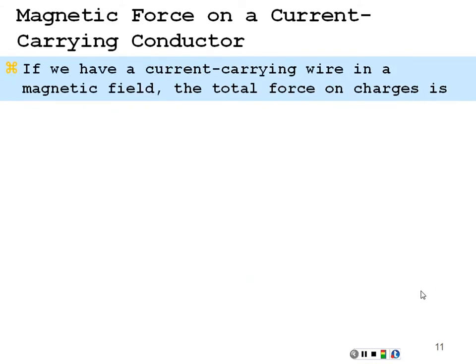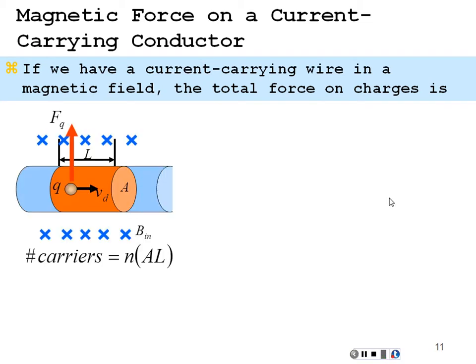We have one cross product equation so far; by the end we'll have three. Consider a wire carrying charge in a magnetic field — there will be a force on each of the charges. If we accumulate all those forces and apply them to the wire, we get the force on a current-carrying conductor.